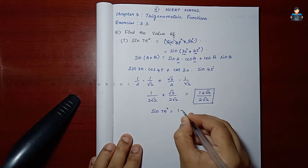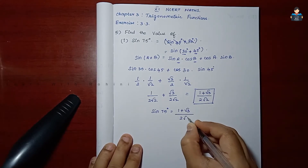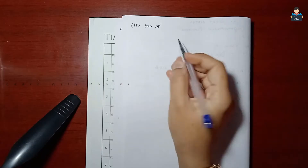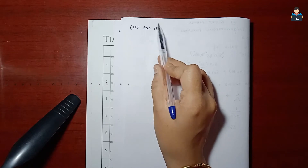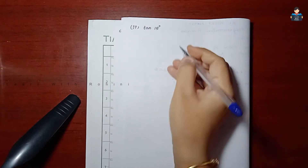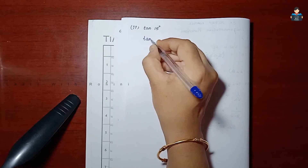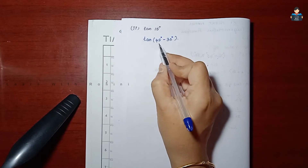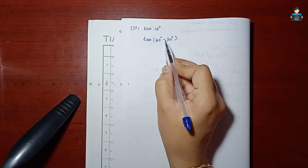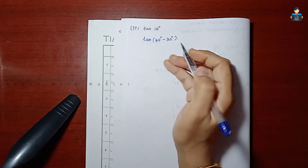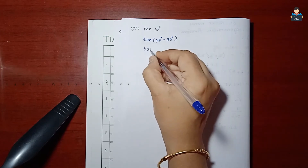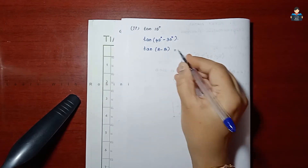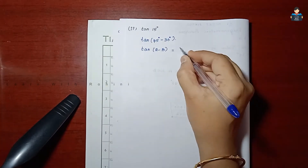So the answer is: sin 75 degrees equals 1 plus root 3 by 2 root 2. Next is the second subdivision. We need to find the value of tan 15 degrees. We write tan 15 degrees as tan(45 degrees minus 30 degrees), so 45 minus 30 equals 15 degrees. Correct.